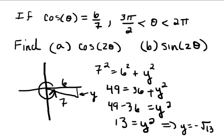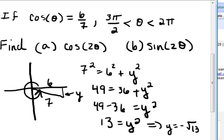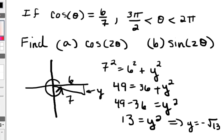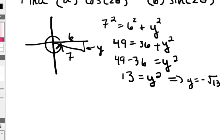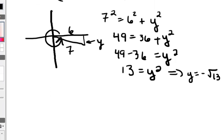So here I have y equals negative square root of 13. Okay, so this is useful because it tells me how I'm going to use my formulas for cosine of 2 theta and sine 2 theta, and I need to know sine of theta.